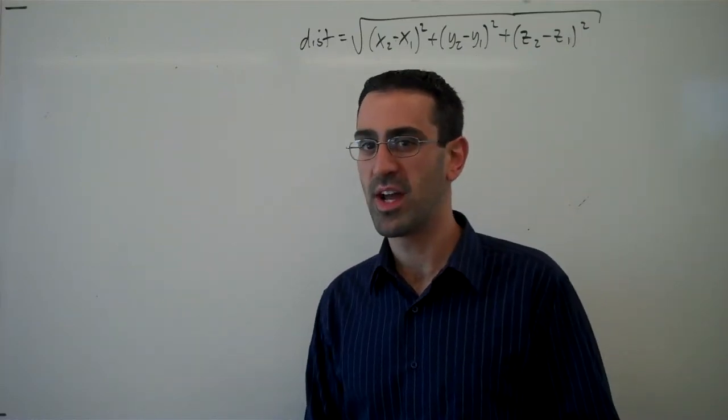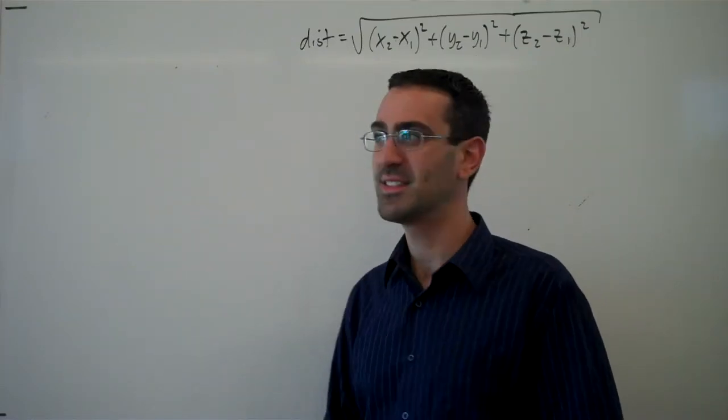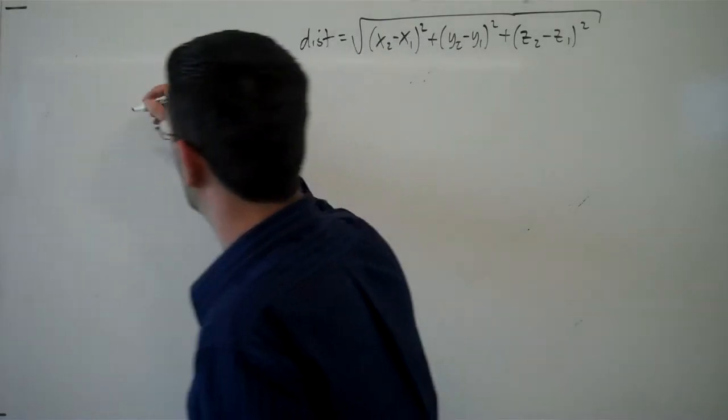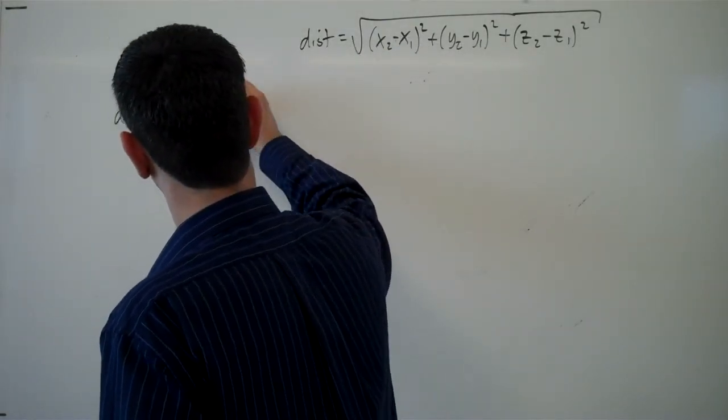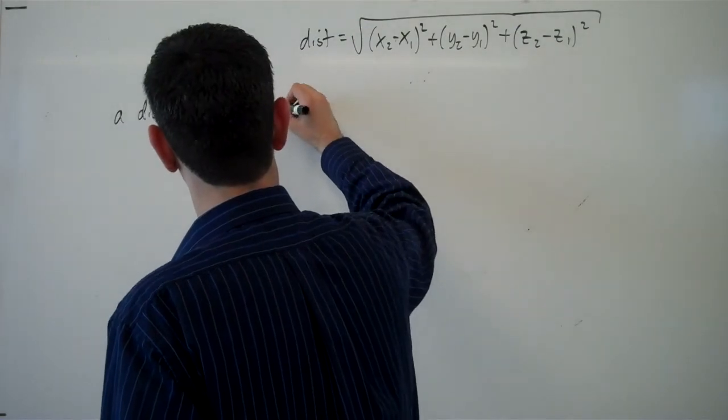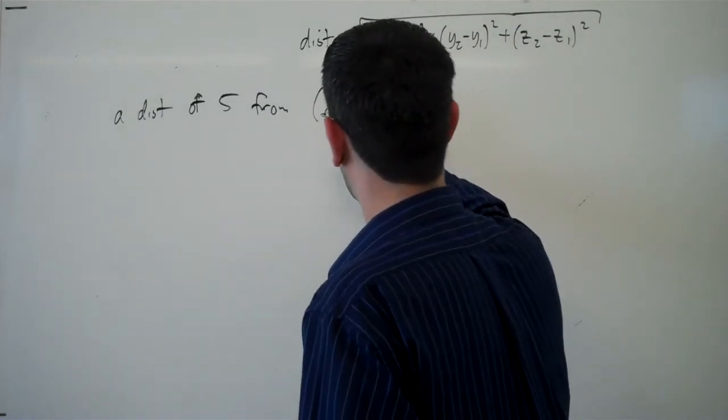Now suppose I wanted to describe all the points that are a distance of 5 from the point 1, 3, 2.